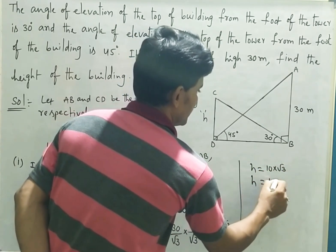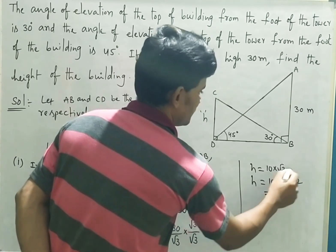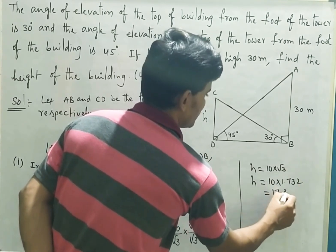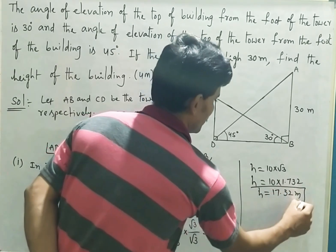That is 10 into 1.732. If you multiply by 10, it becomes 17.32 meters. So this is the required value of h.